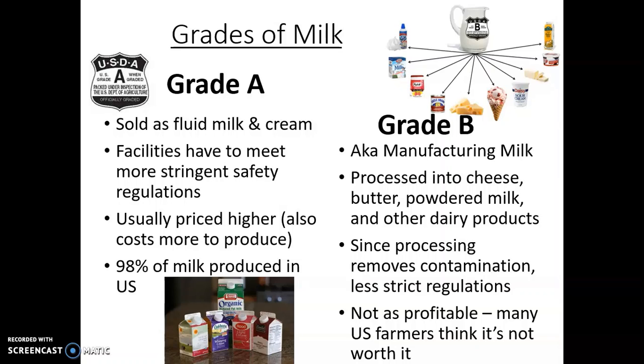There's also a second type of milk called grade B, or manufacturing milk, and that is what usually gets processed into cheese, butter, powdered milk, and other dairy products. Since that processing is a lot of times going to involve heating it up or other methods of decontamination, the regulations aren't quite as strict on the milk that's going to be grade B, but it's also not as profitable. So a lot of U.S. farmers think it's not worth it, and a lot of our milk that is grade B and goes into those products actually comes from other countries.